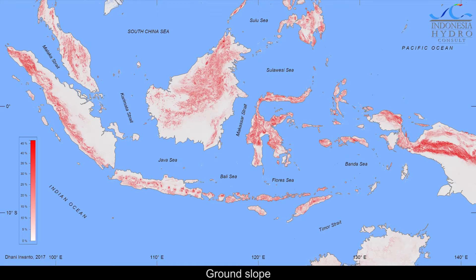The hydraulic head is proportional to the stream slope, and it can be approached with the ground slope. In this case, a derivative approach is used, where the potentials are measured from the elevation differences per unit length of streams. The higher the slope, the higher the hydraulic head per unit length.